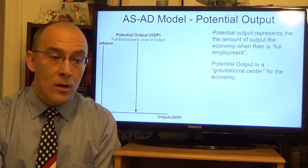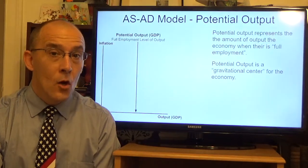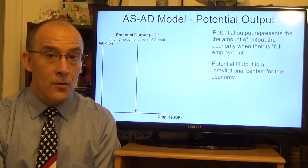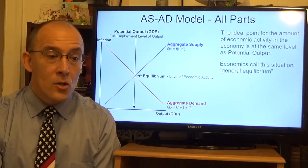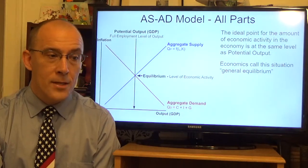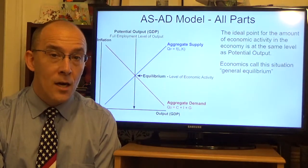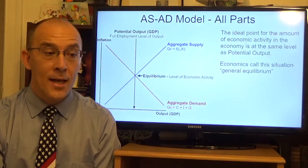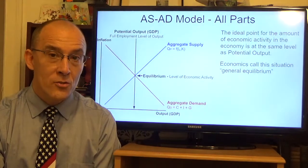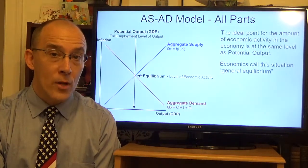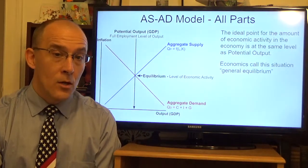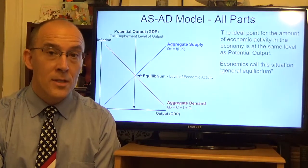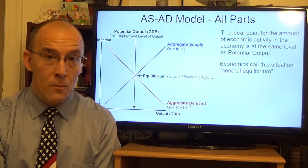In this model, potential output is really the gravitational center of the economy. When the economy is knocked off balance, this is where it will usually trend back to. When all parts of the model — potential output, aggregate supply, and aggregate demand — align, economists call this general equilibrium. Historically, whether there's an aggregate demand shock or an aggregate supply shock, it knocks the economy off balance, but the economy trends back to its level of potential output.